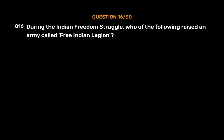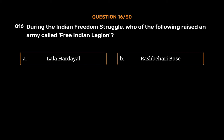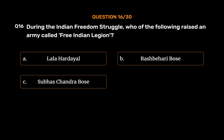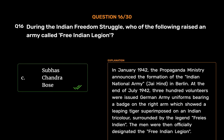Question No. 16. During the Indian Freedom Struggle, who of the following raised an army called Free Indian Legion? Option A, Lala Hardayal; Option B, Ras Bihari Bose; Option C, Subhash Chandra Bose; Option D, V.D. Savarkar. The correct answer is Option C, Subhash Chandra Bose. In January 1942, the propaganda ministry announced the formation of the Indian National Army, Jai Hind, in Berlin. At the end of July 1942, 300 volunteers were issued German army uniforms bearing a badge showing a pink tiger superimposed on an Indian tricolor, surrounded by the legend 'Friya Sandian.' The men were then officially designated the Free Indian Legion.